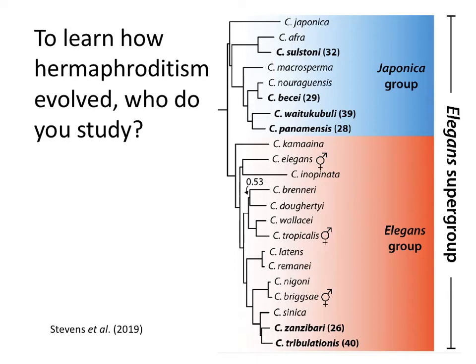If you were going to study how hermaphroditism evolved, which species would you pick? You'd pick hermaphrodites and their closely related non-hermaphrodite relatives. A good idea is to pick a pair — like briggsae and nigoni — where you can do direct comparisons. They're very genetically similar: one's a hermaphrodite, one's female. But that's not what the authors chose to do. They chose to work with C. romanii, which is a female species. Why work with a female species to study how hermaphroditism evolves?